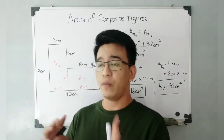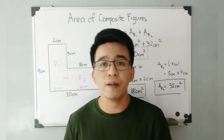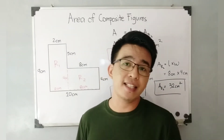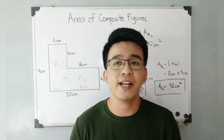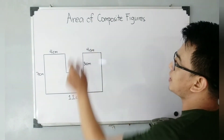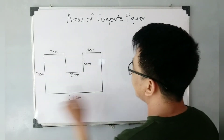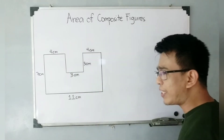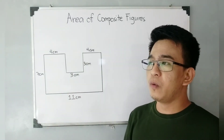That's it for item number one. I hope you learned something from the first part of our video. In the next part, I'll be giving you a more complicated example to practice calculating the area of a composite figure. We have here a second figure where I can reimagine a bigger rectangle and a square.